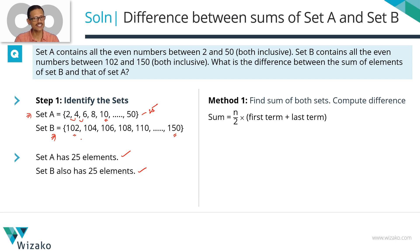So these sets, set A and set B, both these sets are in an AP. Sum of an AP is n by 2, where n is a number of elements in the set, into first term plus last term.